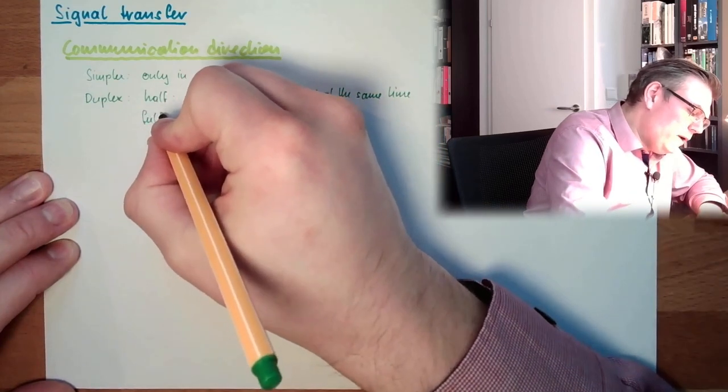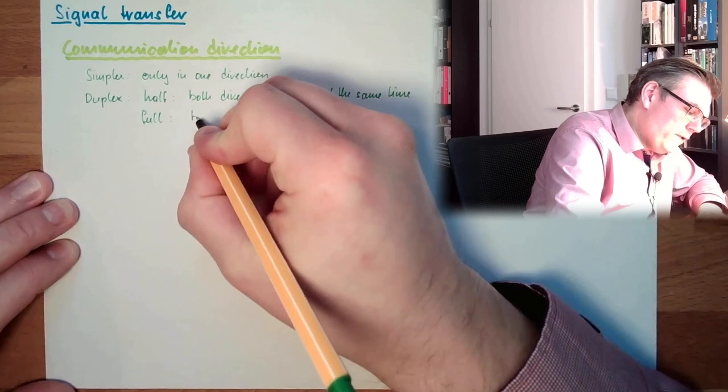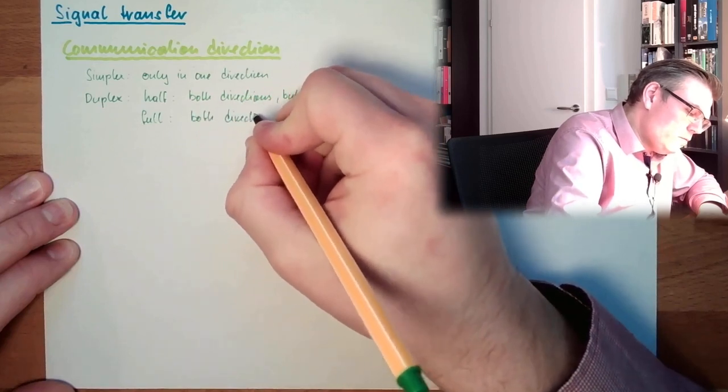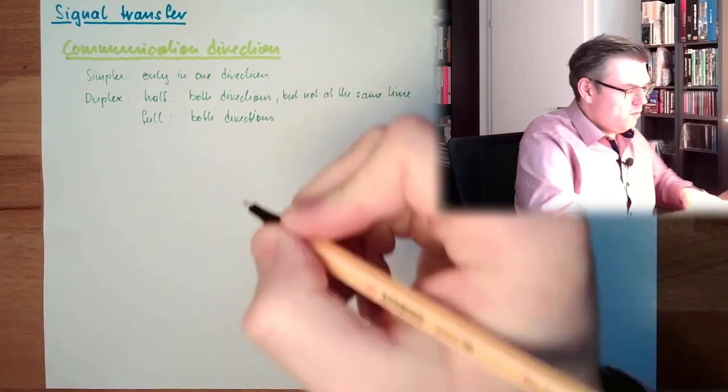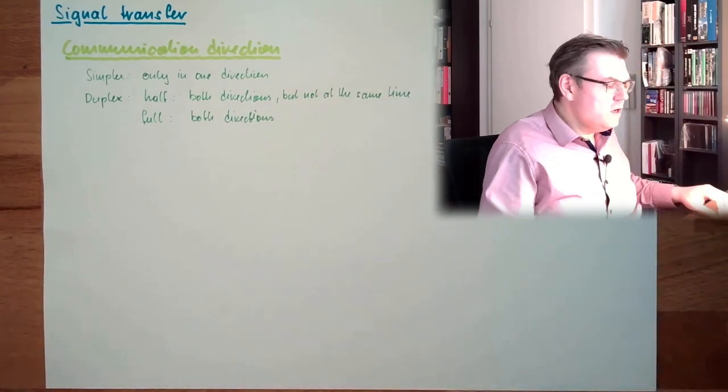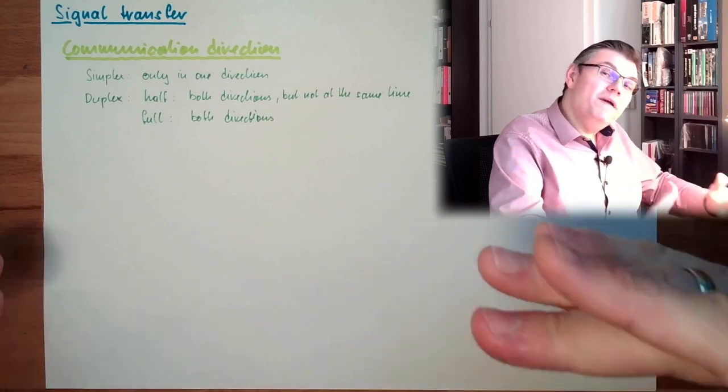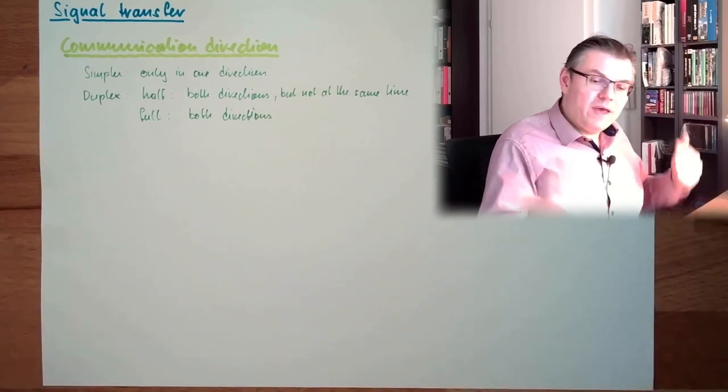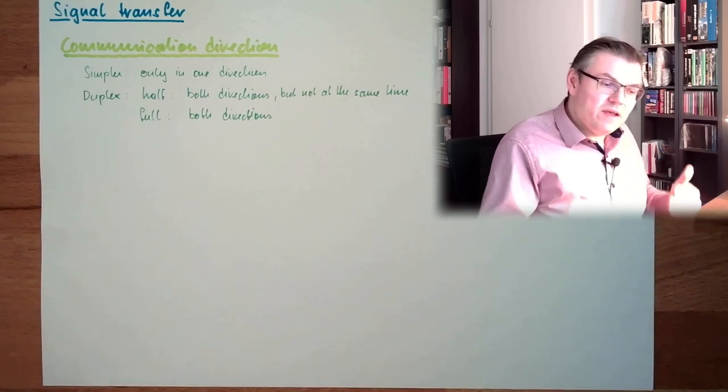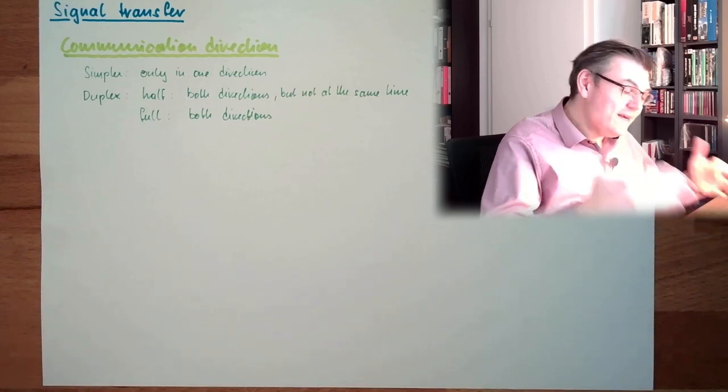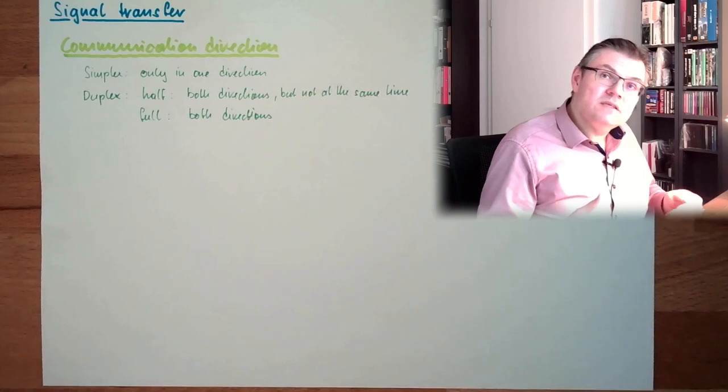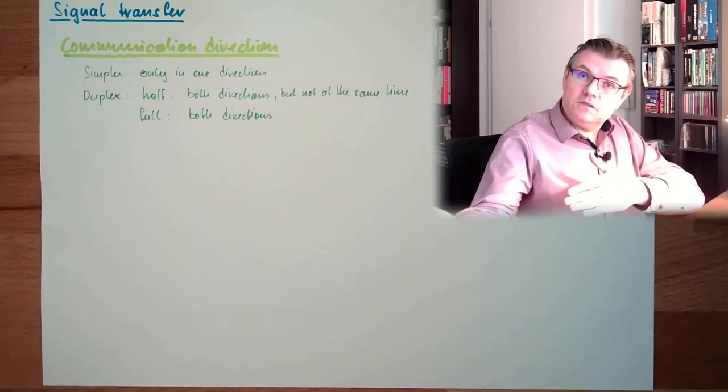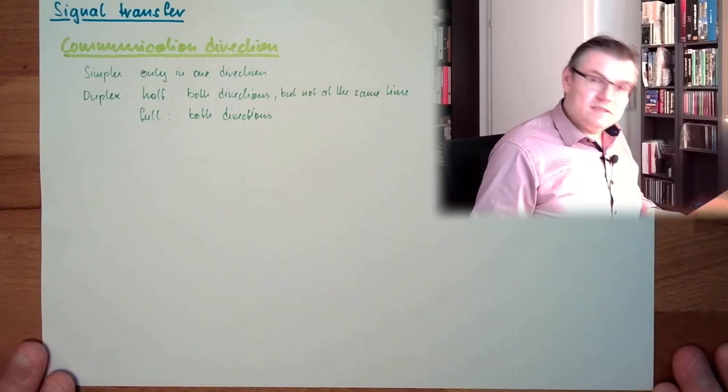And then there's full duplex. Both directions. Communication direction: simplex, duplex half, or full duplex. In full duplex, both can transmit their data and both are able to listen at the same time. Half duplex is somewhat like a distinguished communication. First one is talking, then the other one is talking, but not at the same time.